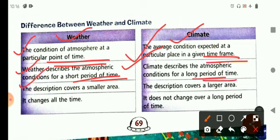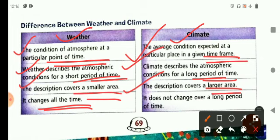The description of weather covers a small area, but the description of climate covers a larger area. Weather changes all the time, but climate does not change over a long period of time.